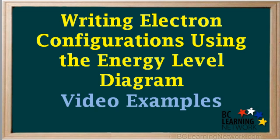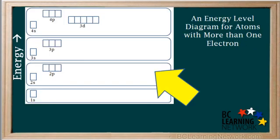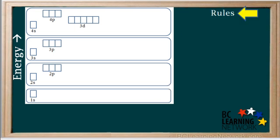In this video, you'll be shown how to write electron configurations using an energy level diagram. Here's a diagram which shows the relative energy levels of various atomic orbitals in atoms with more than one electron. These are also called polyelectronic atoms. There's a definite set of rules which we can use to determine how electrons in various atoms occupy these orbitals. The electron arrangement in orbitals is shown in the atom's electron configuration.